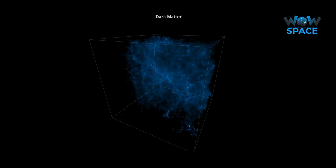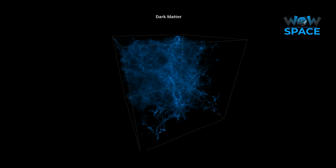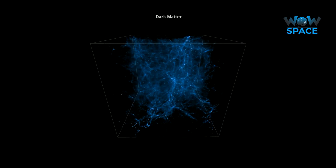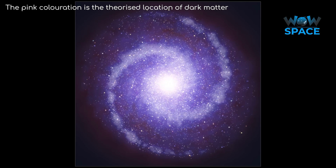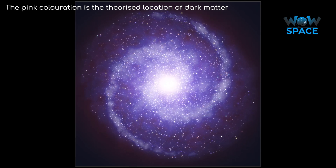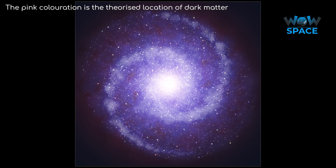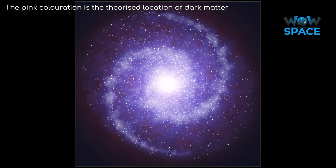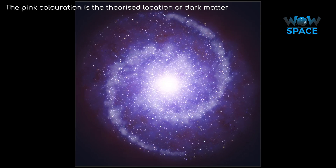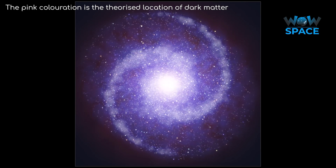Another interesting phenomenon to do with spiral galaxies is something caused by dark matter. In the early universe, when dark matter was more dispersed, stars within galaxies that are dominated by normal matter would orbit a lot slower around the outside of the galaxy than towards the centre.